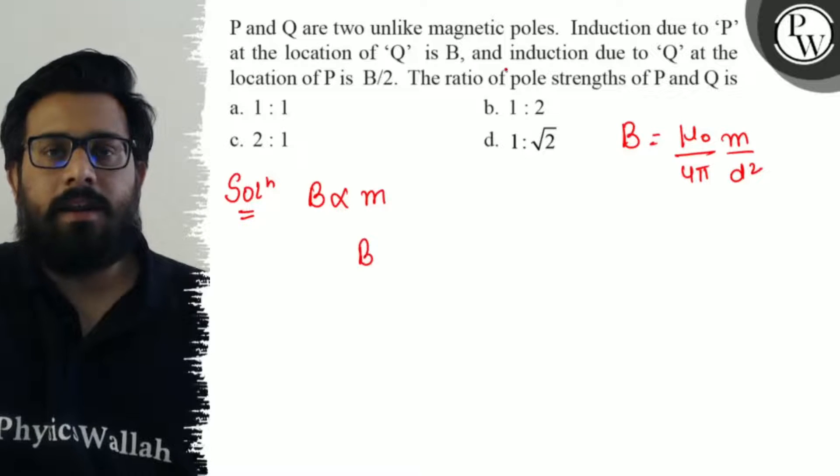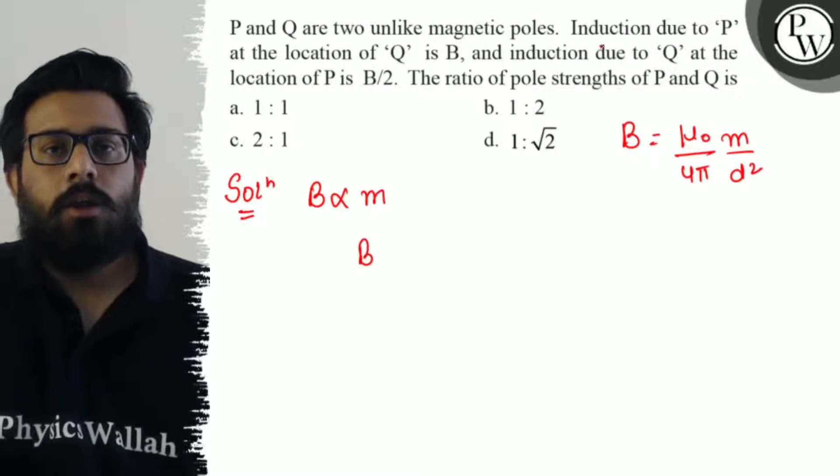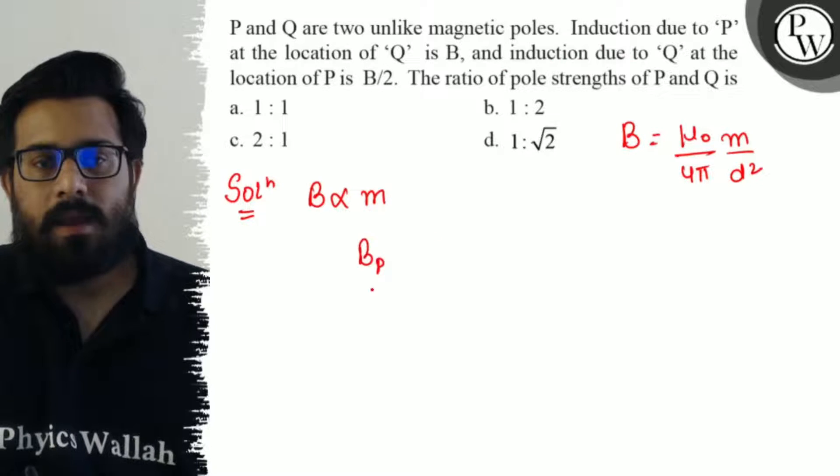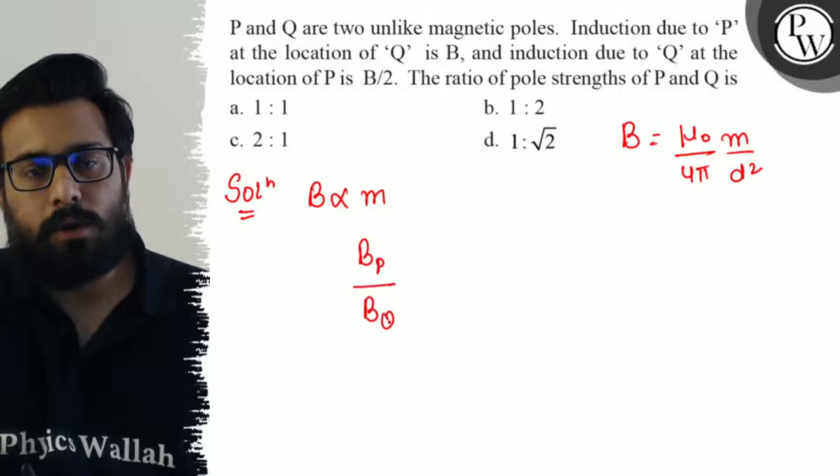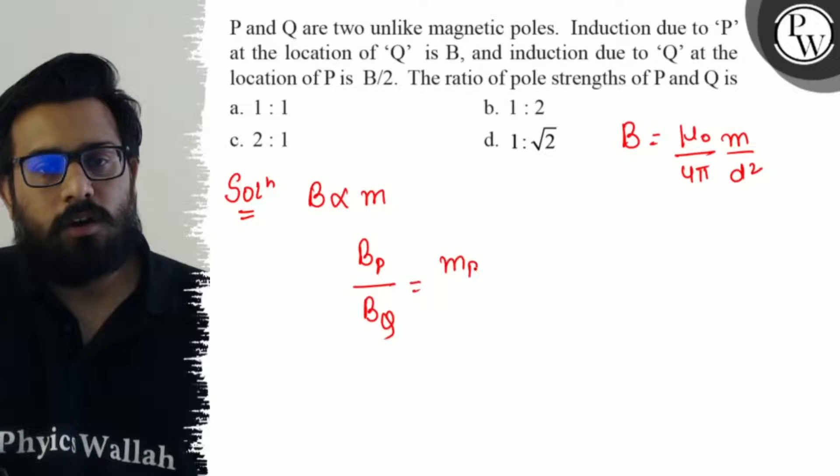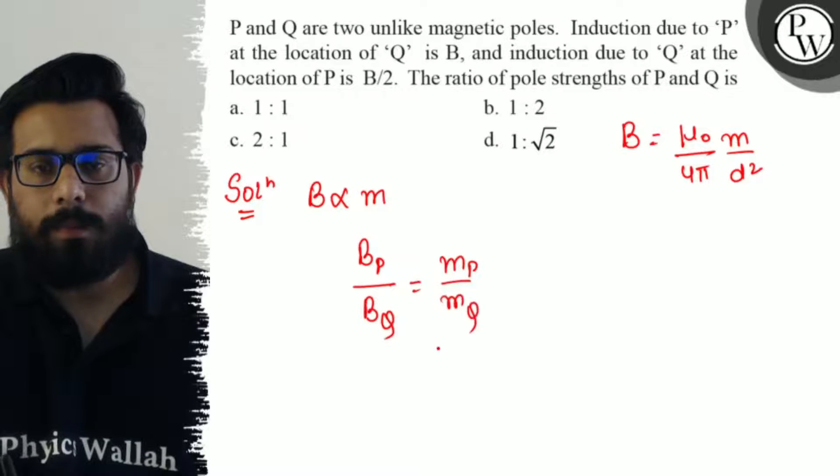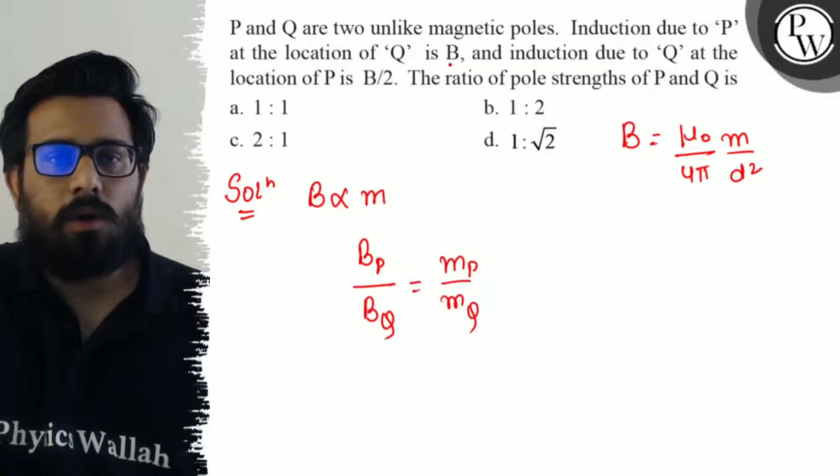So magnetic induction due to P can be written as Bp, and the magnetic induction due to Q can be written as BQ. This is the pole strength of P upon pole strength of Q. Now Bp is B.